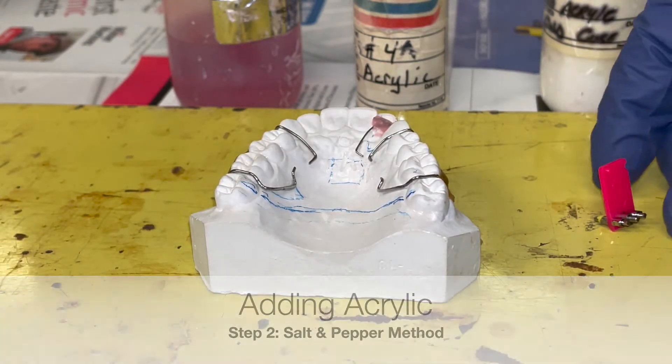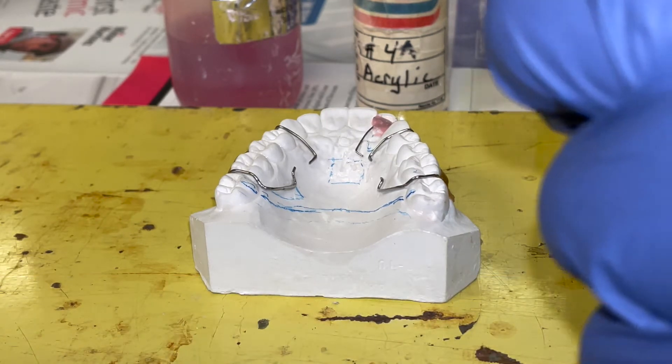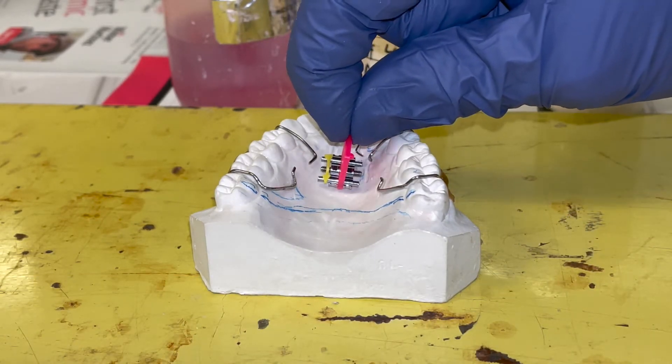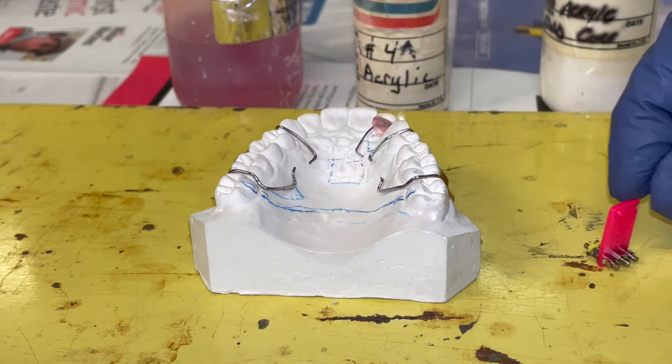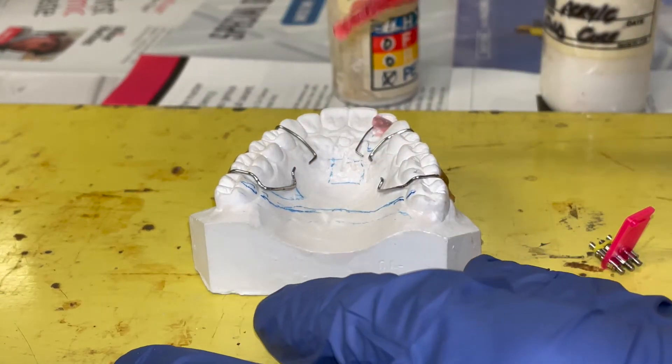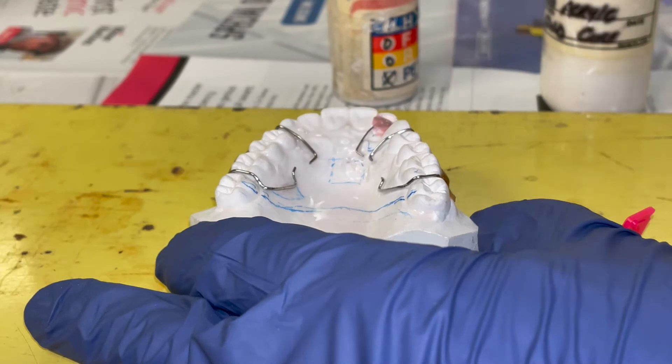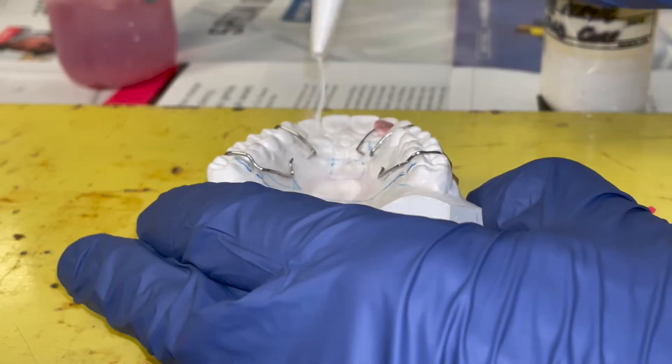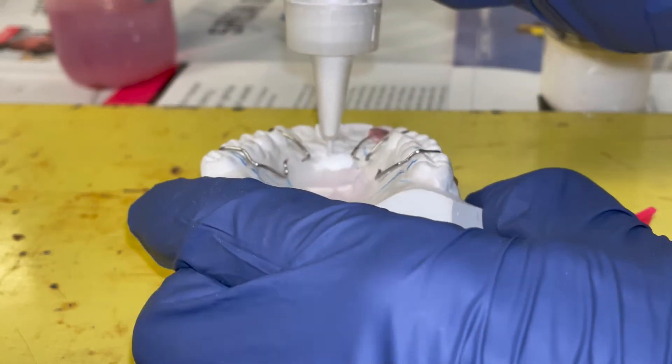Now we want to add acrylic. Our first step will be to position the expansion screw. The arrow must face posteriorly to the back of the mount. So we're going to add a little bit of acrylic where the expansion screw will go to make up a little putty in a mound.